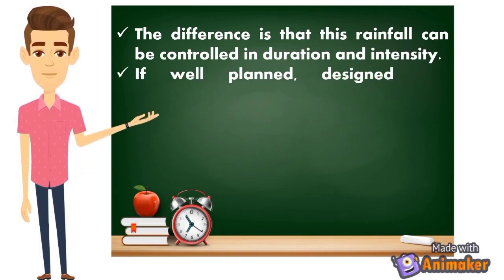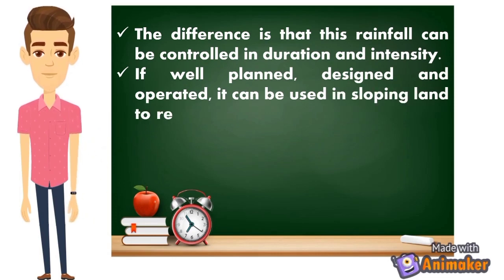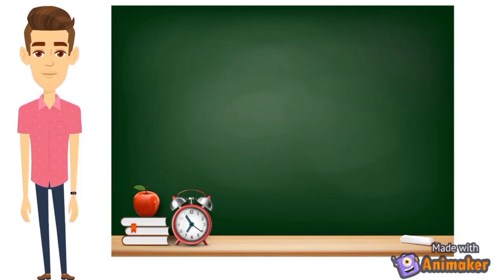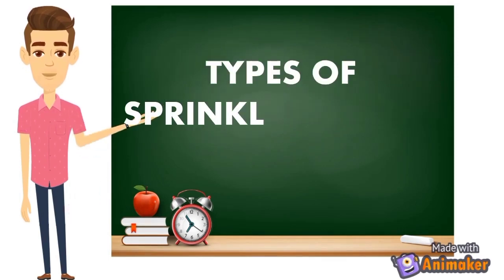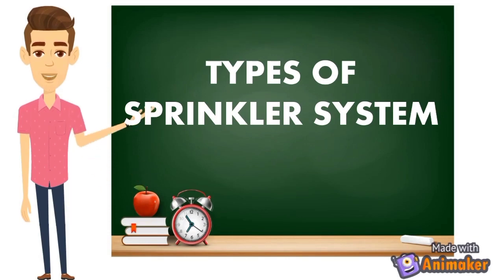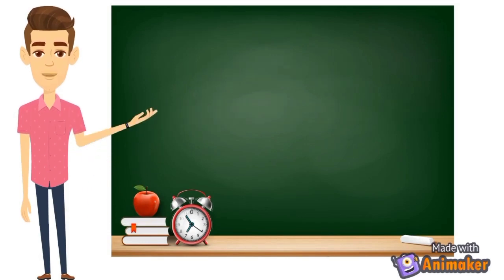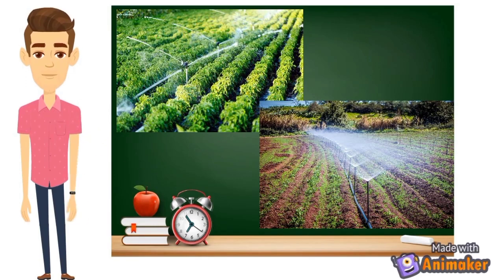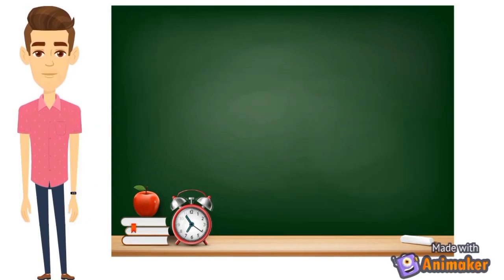If well-planned, designed, and operated, it can be used in sloping land to reduce erosion where other systems are not possible. These are the types of sprinkler systems. Here is an example picture of a sprinkler irrigation system showing how the plants are sprayed to water them.